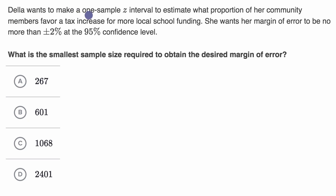We're told Della wants to make a one-sample z-interval to estimate what proportion of her community members favor a tax increase for more local school funding. She wants her margin of error to be no more than plus or minus 2% at the 95% confidence level. What is the smallest sample size required to obtain the desired margin of error?